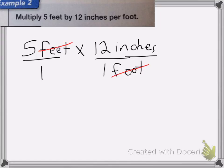So I end up with 5 over 1 times 12 inches. My answer is going to be 5 times 12 is 60, so I'm going to have 60 inches.